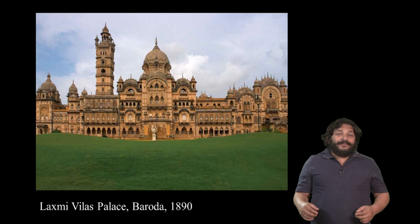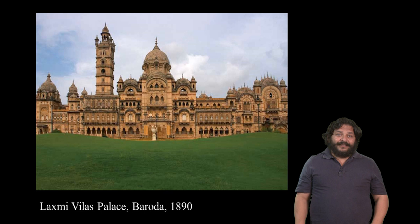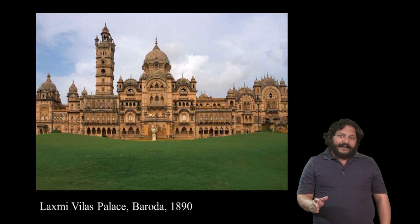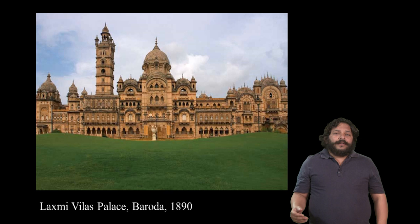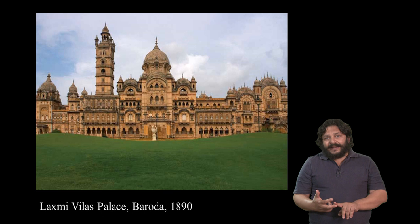The irony is that this new architecture, curiously labelled Indo-Saracenic or in simple words Indo-Islamic, was championed by British architects for their Indian patrons. A number of palaces from the late 19th into the early 20th century are built in this style. Between the neoclassical of the early British period, the Victorian Gothic of the middle colonial period, and the Indo-Saracenic of the late colonial period, there were several tensions.